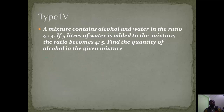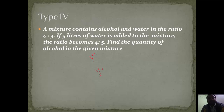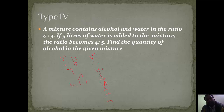Now this type of question: suppose a mixture contains alcohol and water in the ratio 4 is to 3, which means 4x and 3x. If 5 liters of water is added to the mixture, the new ratio of alcohol to water becomes 4 is to 5. So we write 4x / (3x + 5) = 4/5. We cross-multiply and solve to get the answer.